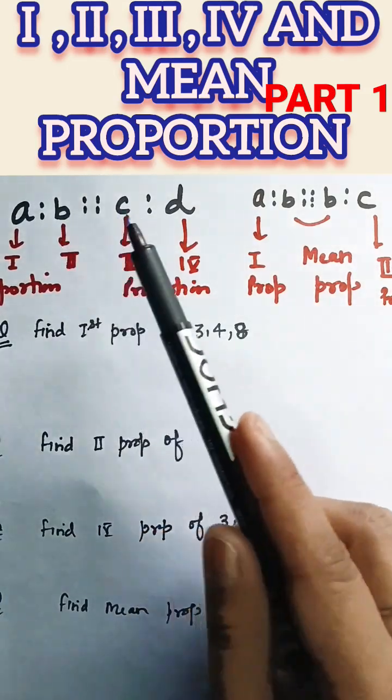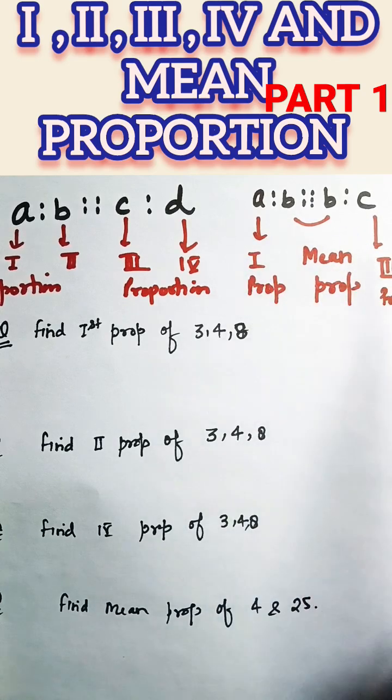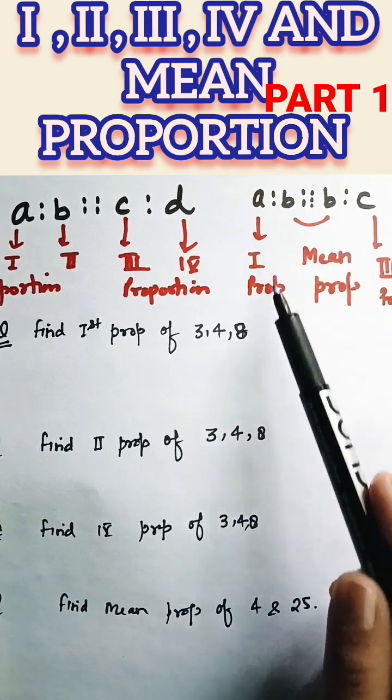But in case if you have B and C are equal, A ratio B proportion B ratio C, then A and C are said to be first and third proportion and B is said to be the mean proportion.